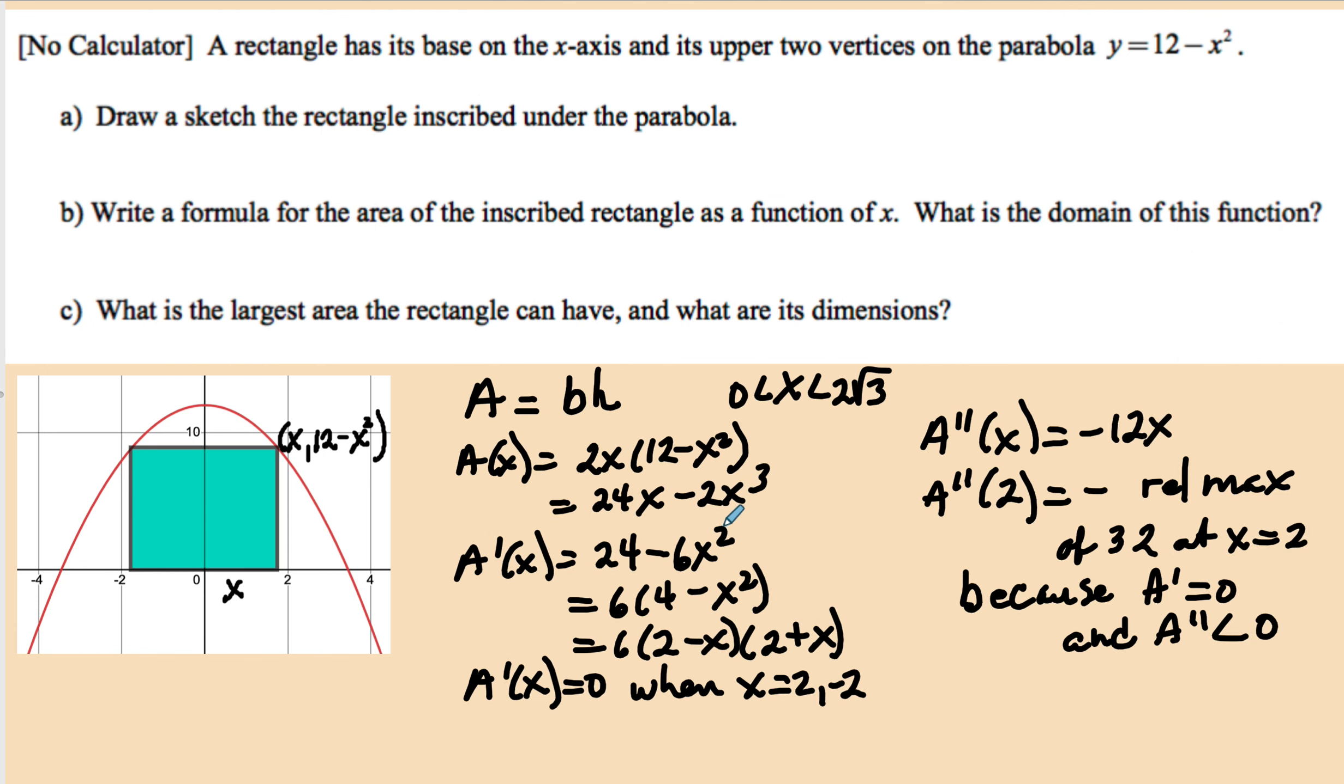Okay, so what I did is I went ahead and took the derivative and found the critical points. And I chose to go to the second derivative test by taking the second derivative, evaluating at 2. At 2, I have a negative value, which is a relative max. I went ahead and put 2 back into my function, I got 32. And I know this is at 2. And I don't have to look at the endpoints because they will not yield a rectangle at all.